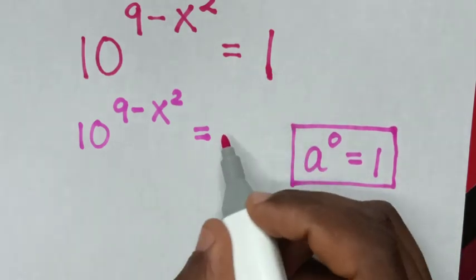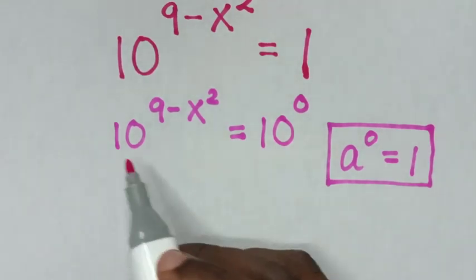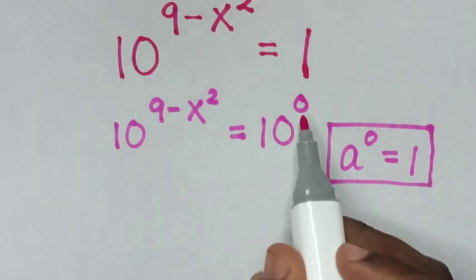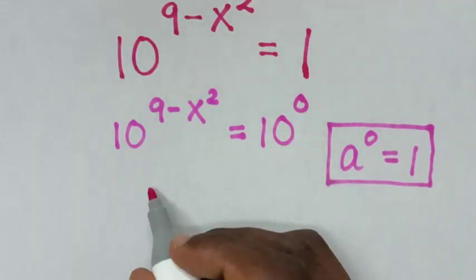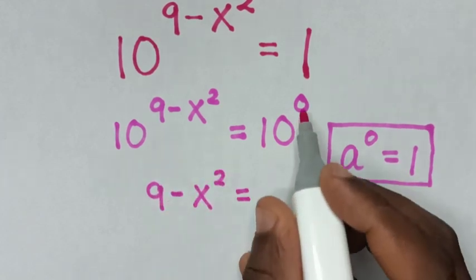Then this one is the same as 10 to the power of 0. In the next step, because we have the same base of 10, we'll compare the powers. So it will be 9 minus x squared equals 0.